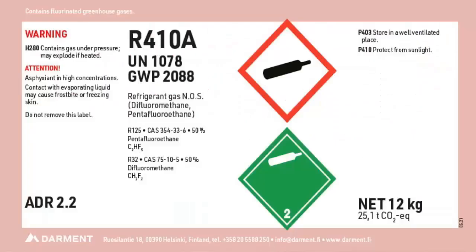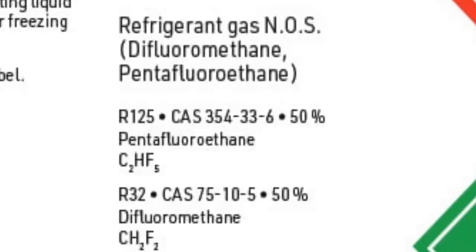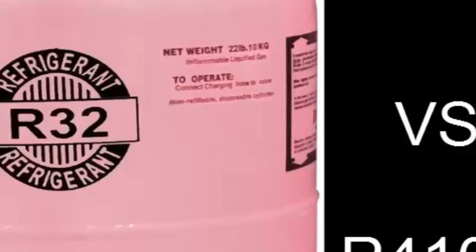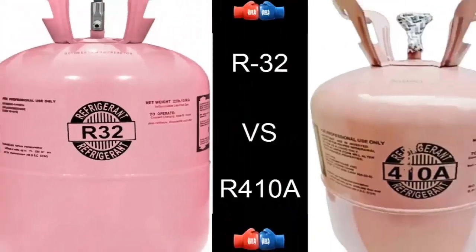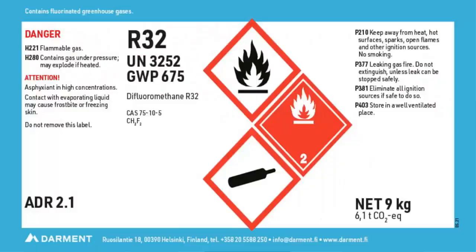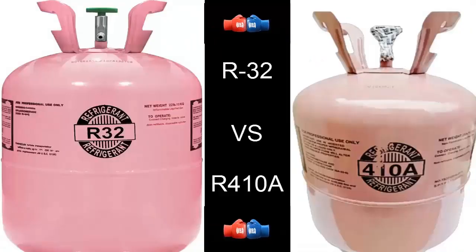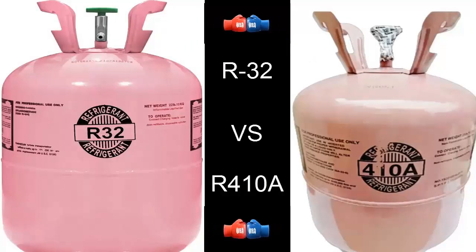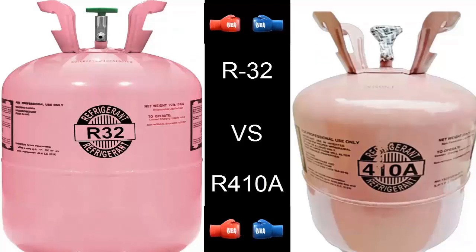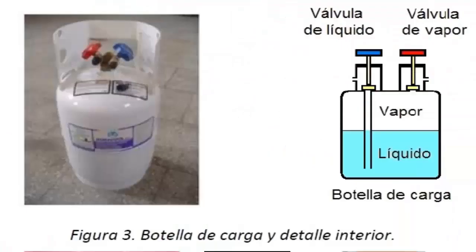Let's start by stating that R410A is a blend of two gases, in contrast to R32 refrigerant, which is an unadulterated gas composed of a single element. R410A is predominantly comprised of R32 and R125 in an equitable proportion of 50% for each component. R32, being a pure gas, can be charged in either liquid or gaseous state.